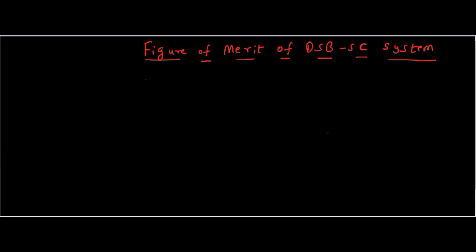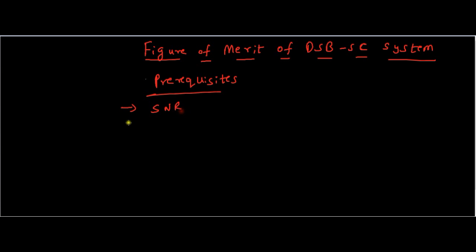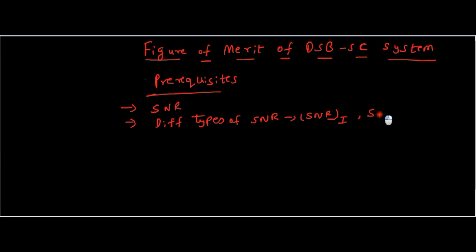Hello all, welcome to the new video. In this video we will discuss the figure of merit of the DSB-SC system, which is a popular technique used in modulation — specifically Double Sideband Suppressed Carrier. We have studied this modulation technique. We will define the figure of merit using the signal-to-noise ratio from the previous video. The prerequisite is knowing what SNR is and the different types: SNR of Input, SNR of Output, and Channel SNR.